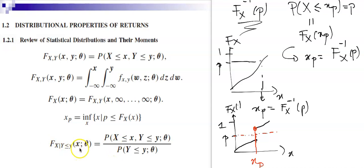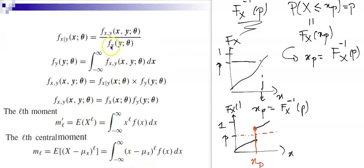Using Bayes' theorem, the conditional distribution of X given Y ≤ y is the probability that X ≤ x and Y ≤ y divided by the marginal distribution of Y. We also have conditional densities, marginal densities, and joint densities. In the case of independence between X and Y, the joint density equals the product of the marginal densities.